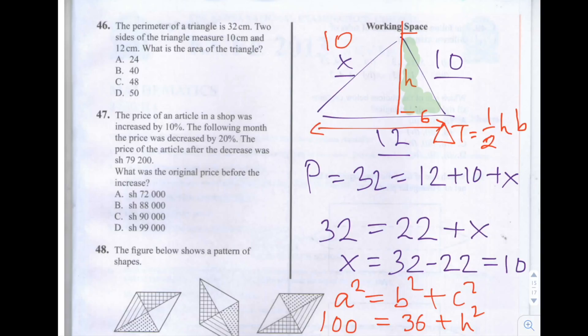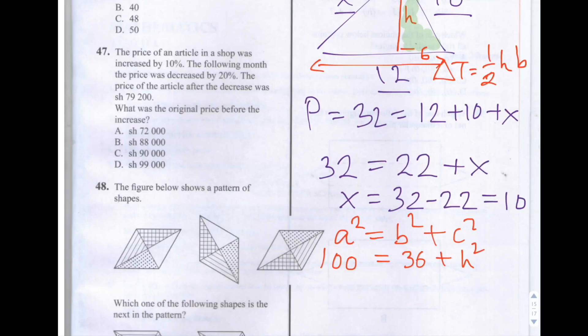So if we subtract 36 from 100, we will get 64. So 64 is equal to H squared. So that means that H is equal to 8, as we know that 8 times by 8 is equal to 64.